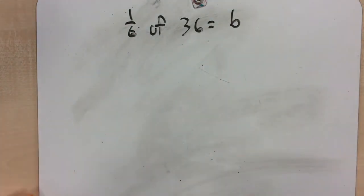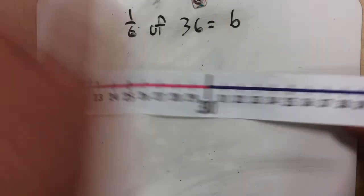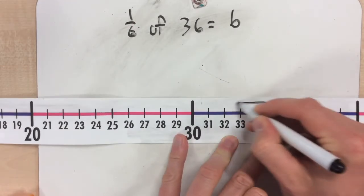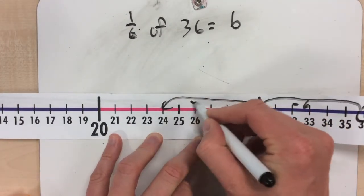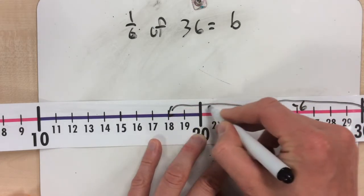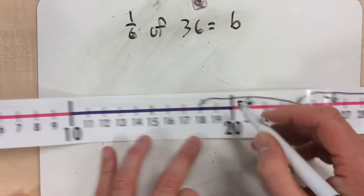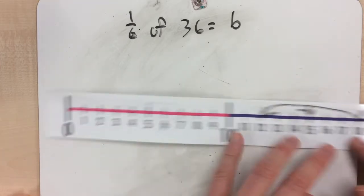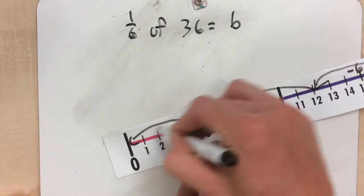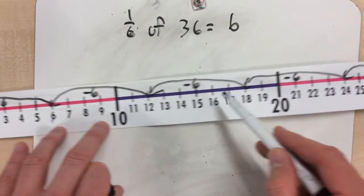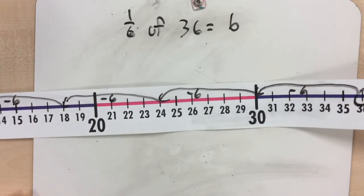Going back to our number line, I start on 36. I'm going to take away 6: 36 take away 6 is 30, take away 6 is 24, take away 6 is 18, take away 6 is 12, take away 6 is 6, take away 6 is 0. I did 6 jumps. So 1/6 of 36 is 6.